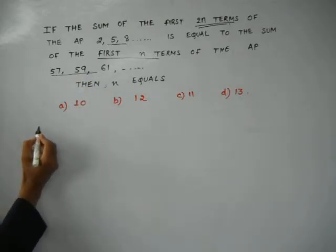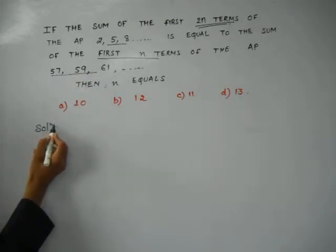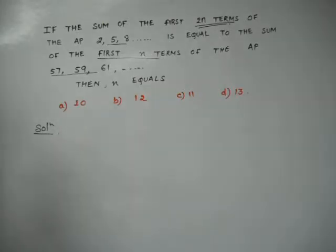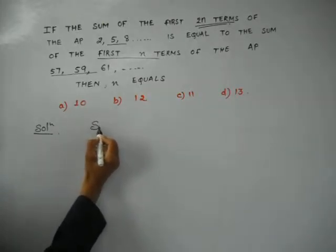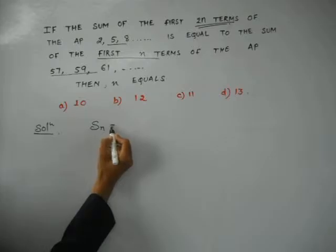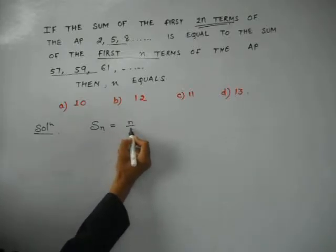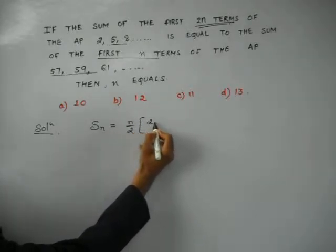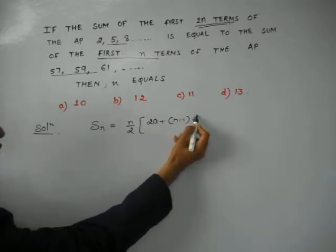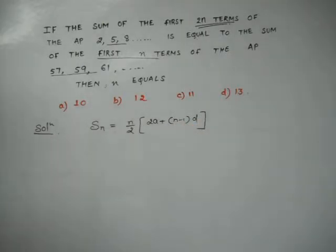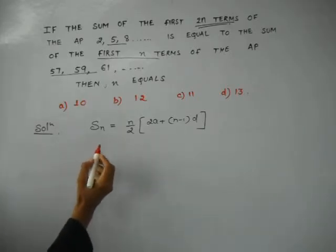So, we should know that AP means the sum to n terms of AP is given by n by 2, 2A plus n minus 1 times d. So, this is the formula for sum to n terms. So, if we want to equate the two APs, then we start like this.